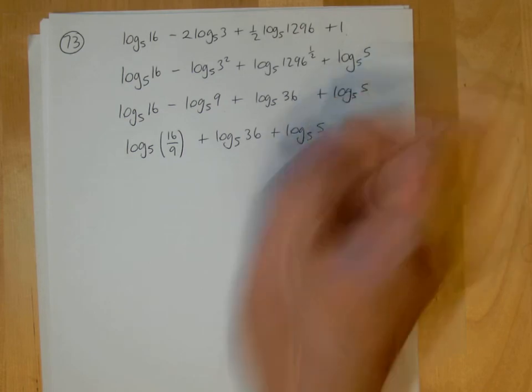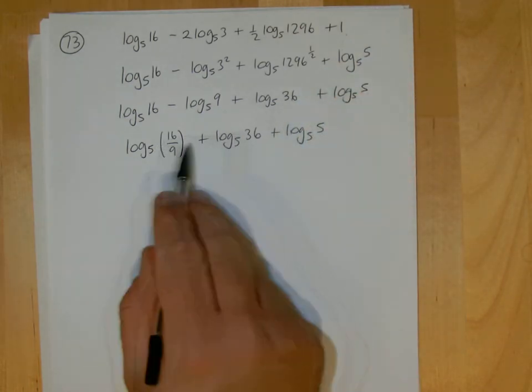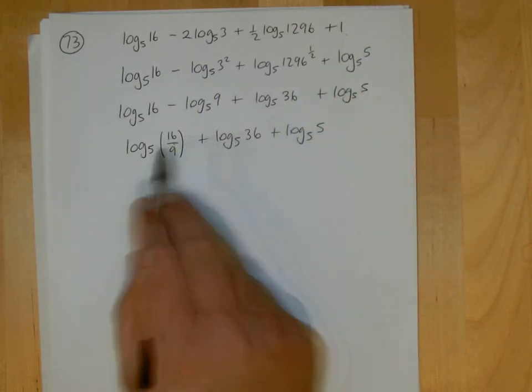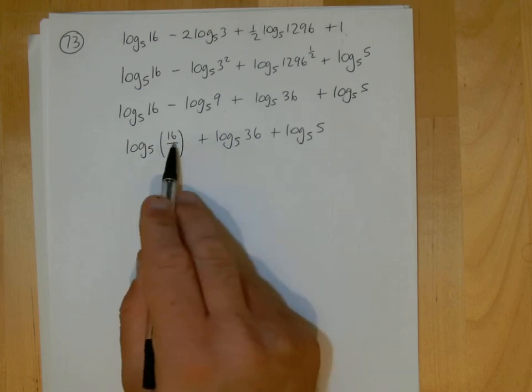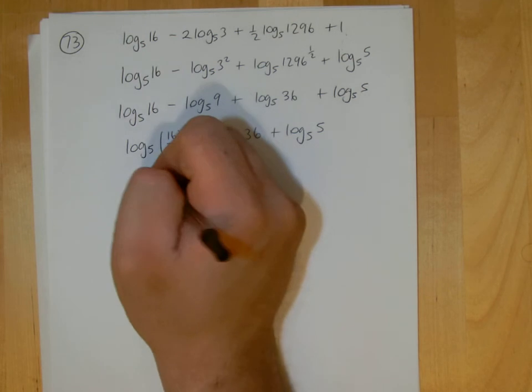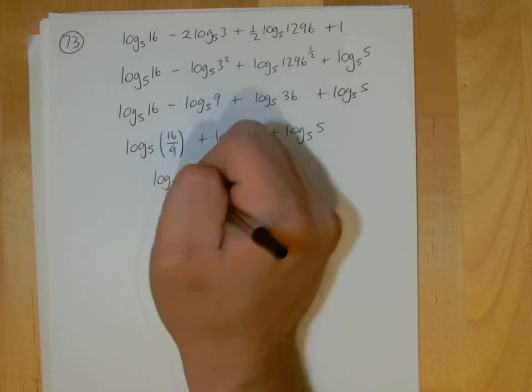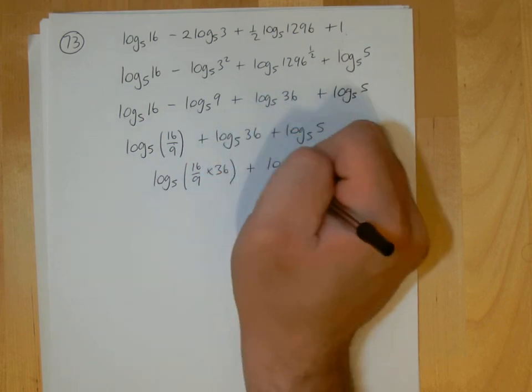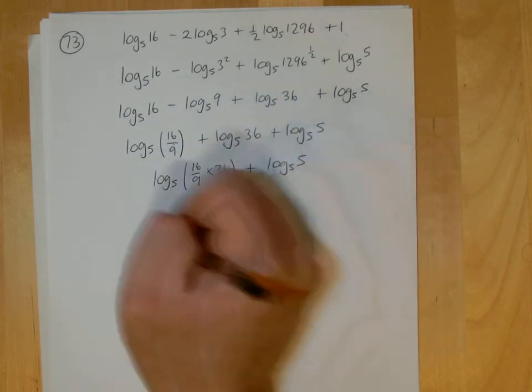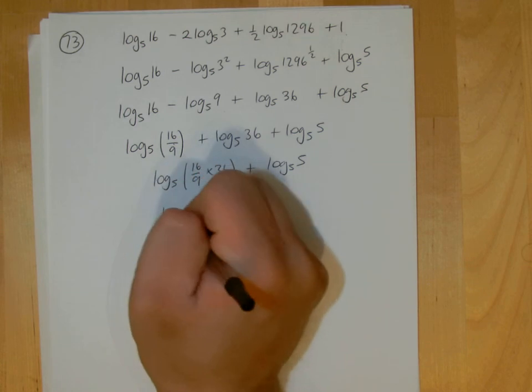Working with pairs of logarithms at a time. So on the next line now, let's put this pair together. Because we're adding the logarithms, we multiply the terms. So this will be log base 5 of 16 over 9 times 36, plus then log base 5 of 5.